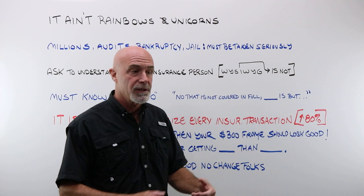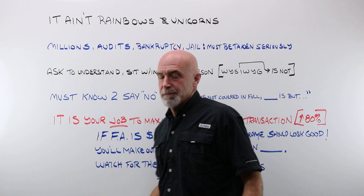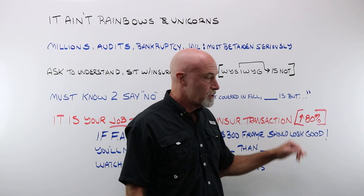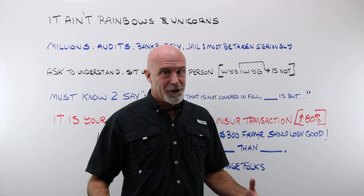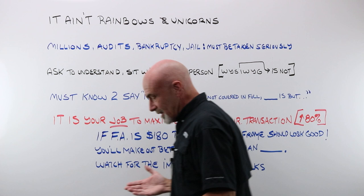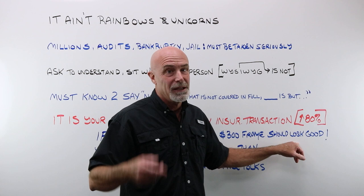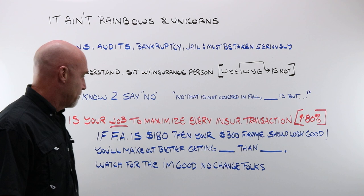It is your job as an optician to maximize every insurance transaction. Somewhere above 80% of every single person that comes into the store with a vision care plan, you should be upselling. You should not be aiming for whatever is covered. If a frame allowance for a plan is $180, then your $300 frames should be looking pretty darn good to that customer. And you've got to think that way or you're not going to survive. If you try to help every person stay exactly at their allowance, you're going to be out of business in no time.